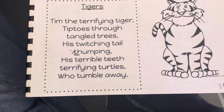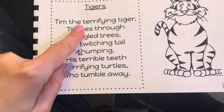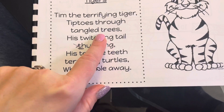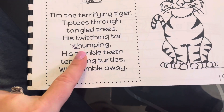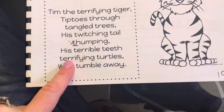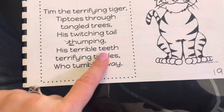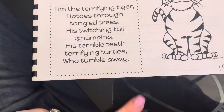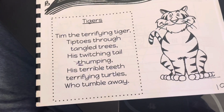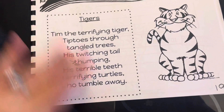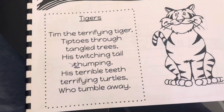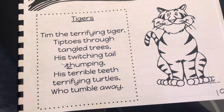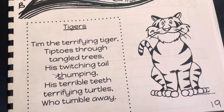I really enjoy this tiger one down here — it's like a little poem. It reads: 'Tim the terrifying tiger tiptoes through tangled trees, his twitching tail thumping his terrible teeth, terrifying turtles who tumble away.' That's hard to say fast. Can you say it three times fast? Read that real fast to yourself. Tim the terrifying — terrible tiptoes through tangled trees, his twitching tail thumping, his terrible teeth, terrifying. See, it is hard.